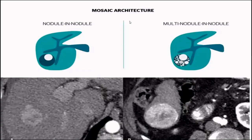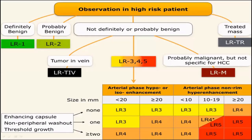HCC may show mosaic architecture due to nodule-in-nodule or multinodular appearance, which are also favoring features. According to the LI-RADS diagnostic table, when we have an observation in cirrhotic parenchyma that is definitely benign — like a cyst or hemangioma — it is LR-1. Lesions like focal confluent fibrosis or regenerative and cirrhotic nodules are probably benign and fall under LR-2.